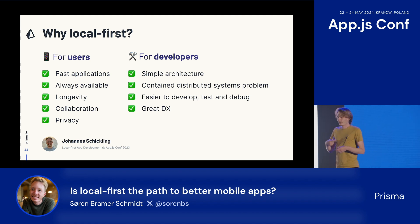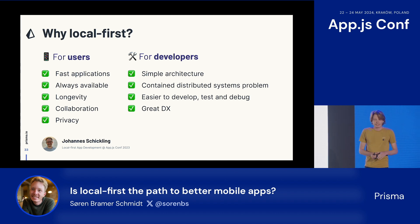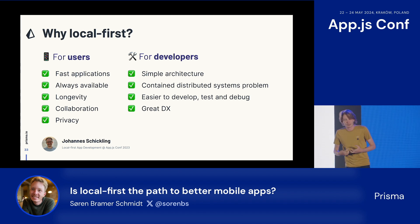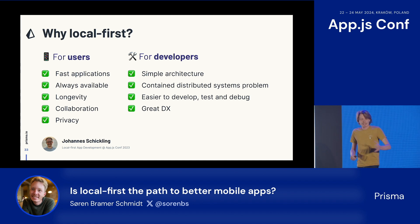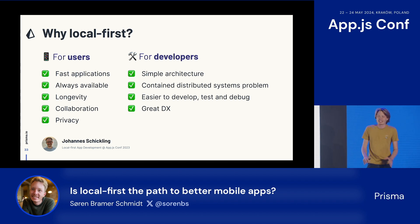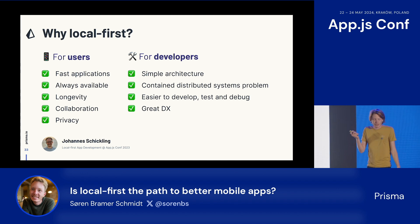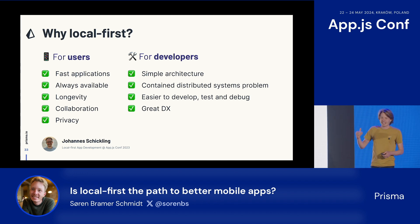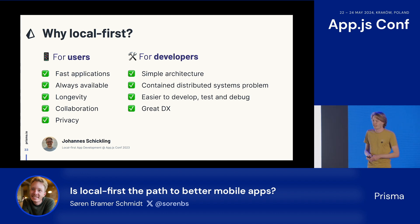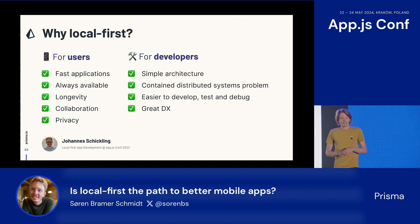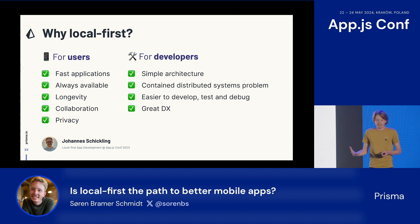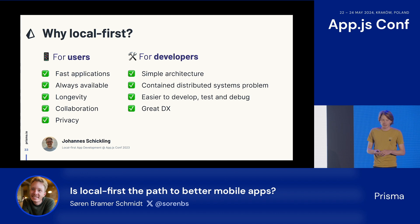So why Local First? When we think about ways to build applications, there are always two perspectives: the perspective of the user, and the perspective of us — the developers. For the users, it's clear: we just want to build great apps. Most of the apps out there in the app store aren't great — they're okay, but not great to use. But we developers, we're lazy, and that's a good thing. That's how we advance the industry. We build abstractions, we hide complexity. That's what's really exciting about Local First — we can find a better, faster, easier way to build applications that also deliver a much better user experience.